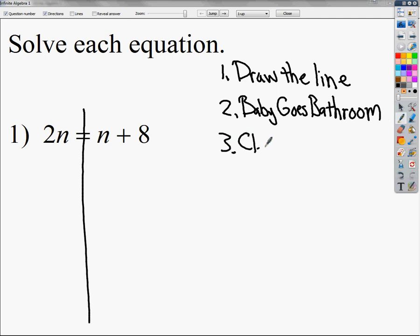The next one is clean your room. When I say clean your room, I mean combine any like terms that happen to be on the same side of that line we've just drawn. In this case, I've got 2n on the left side and n plus 8 on the right side. None of those are like terms on the same side of the line. n and 8 are not like terms. And 2n is all by itself.